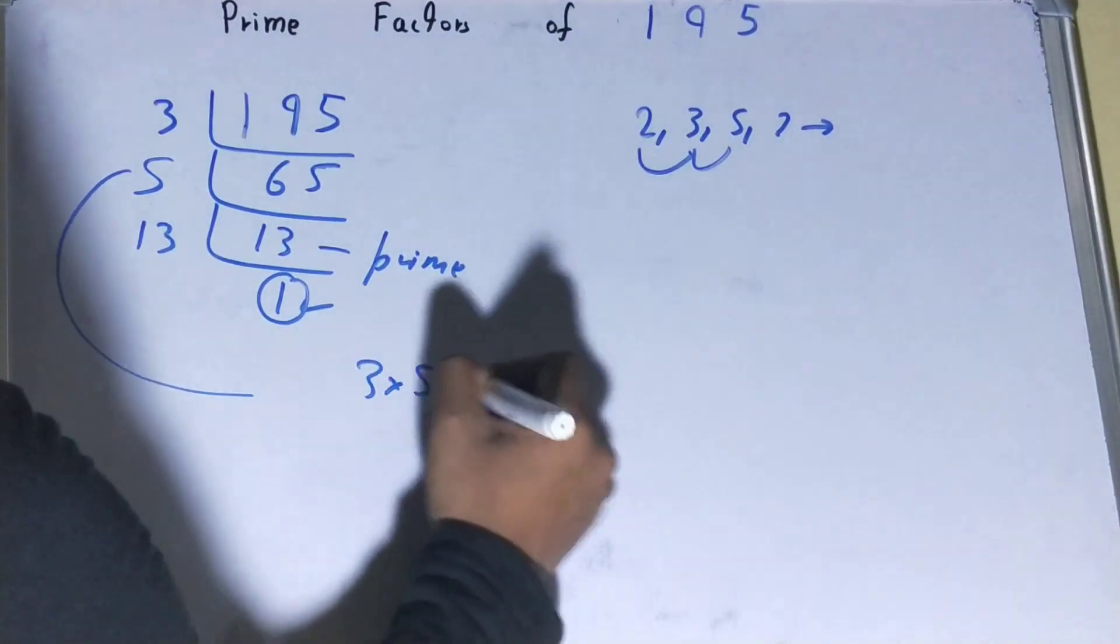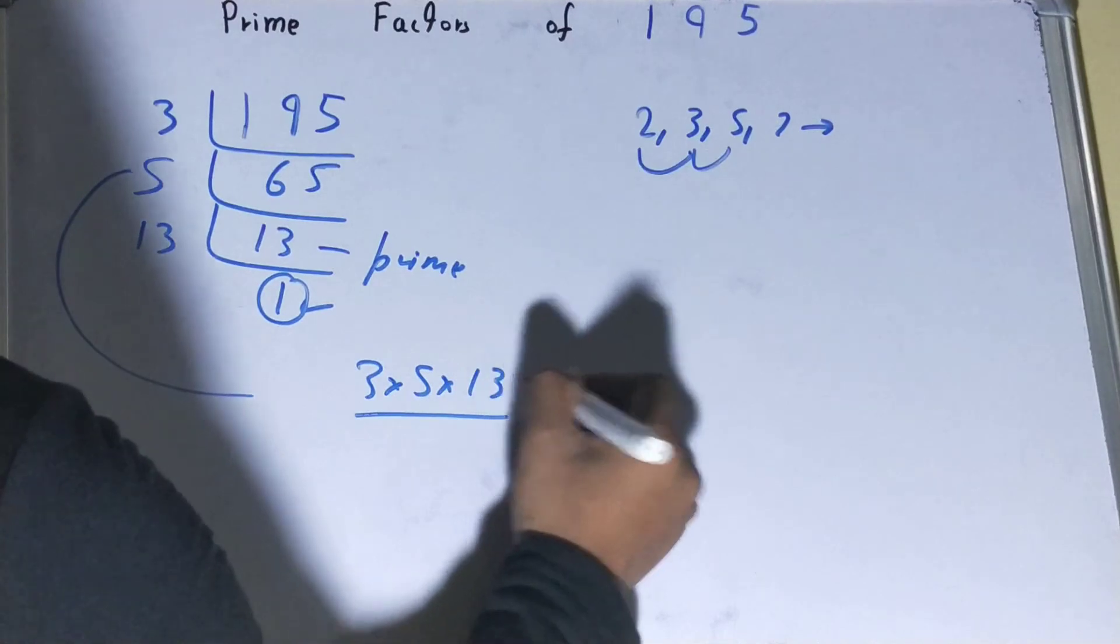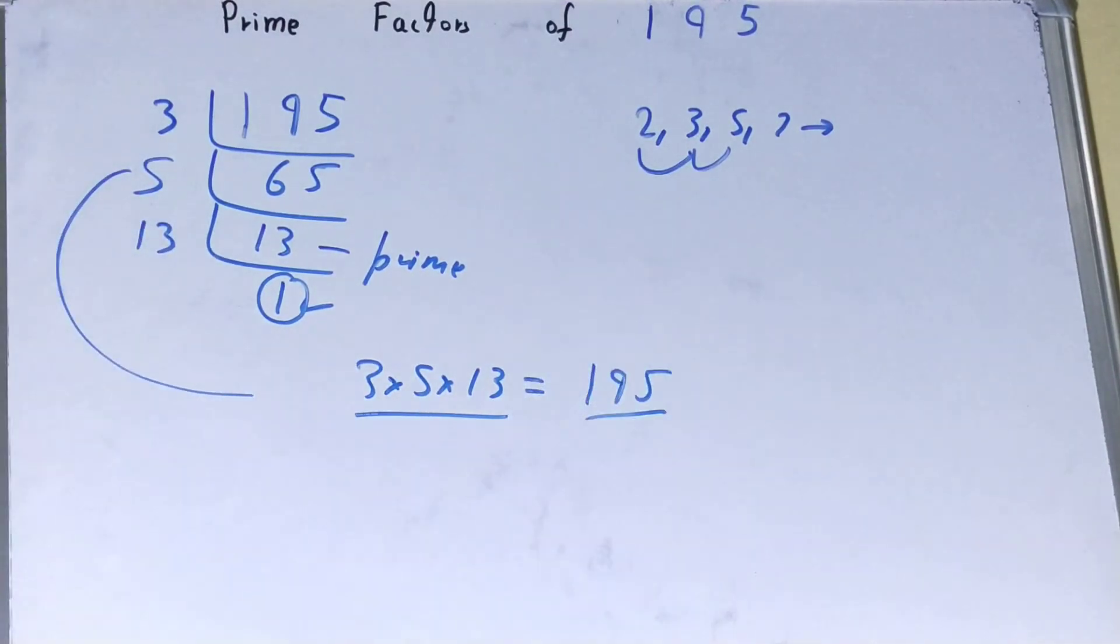If you want to confirm whether it is right or not, you can multiply them, and if on multiplying you have the number back again, that means your calculation is correct. If not, you need to recheck.